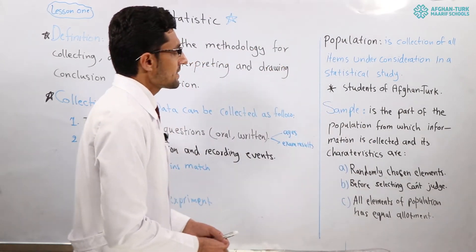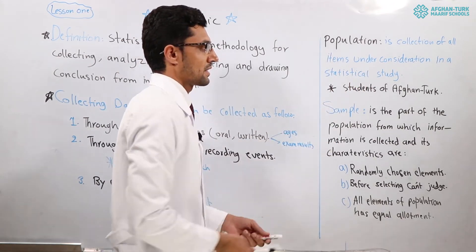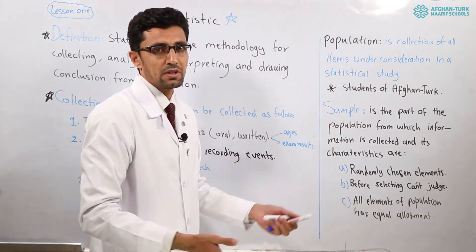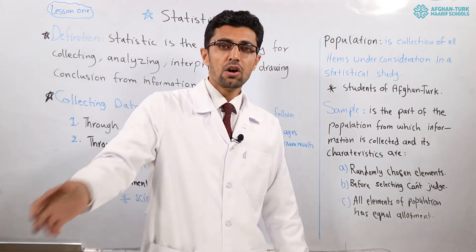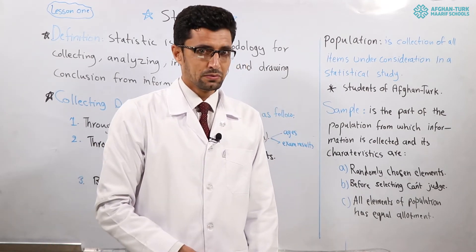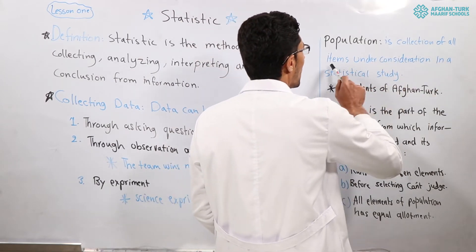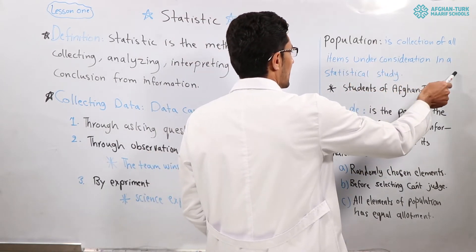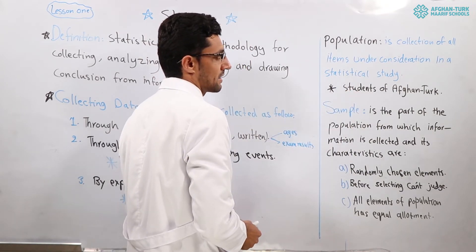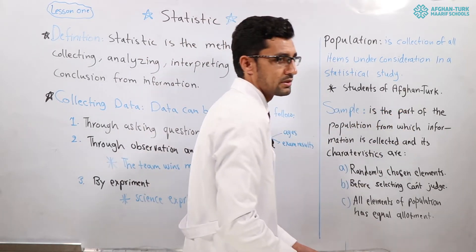Let's study the definition of population in statistics. Population is collection of all items — very simple, collection of all items. In your class, there are three students — that is population. It is the collection of all items under consideration in a statistical study. For example, students of Afghan Turk.